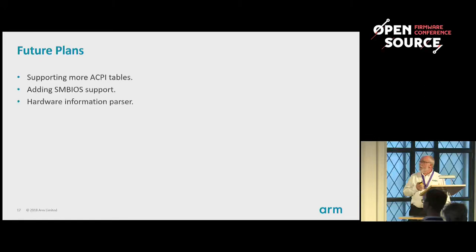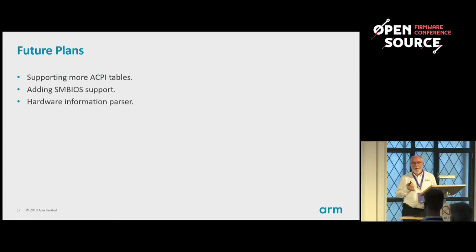Those of you at the trusted firmware talk yesterday will have heard there's a move to use device tree as the system description for trusted firmware. One interesting option we have is to pass a device tree-like structure — and I'm emphasizing 'like' because in certain areas like server, device tree is not a welcome term — but we believe we can take a device tree-like description and generate the ACPI tables from that. That's our next step.